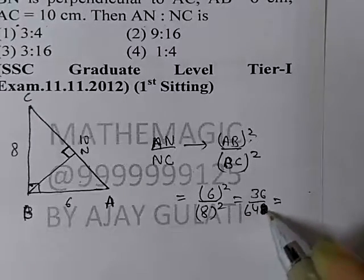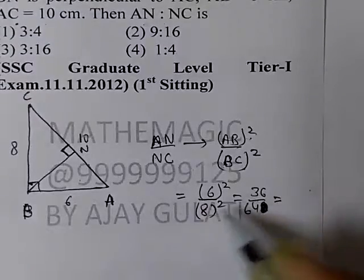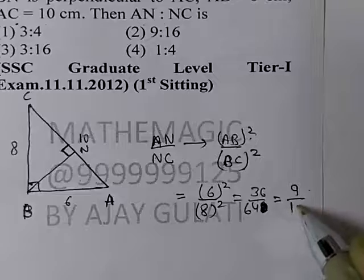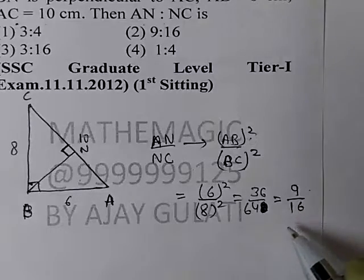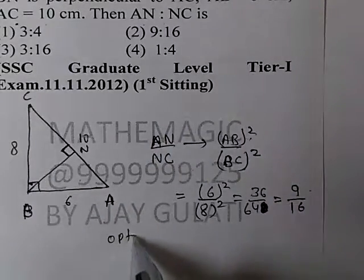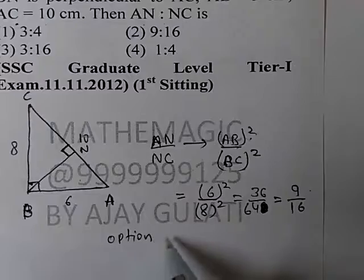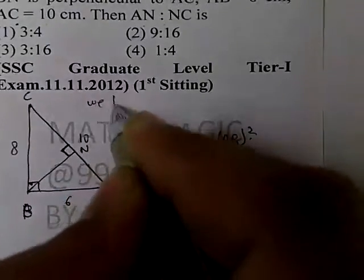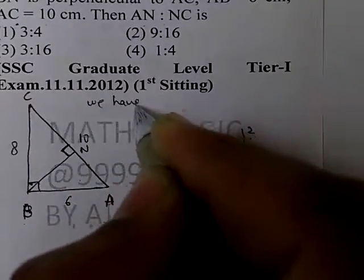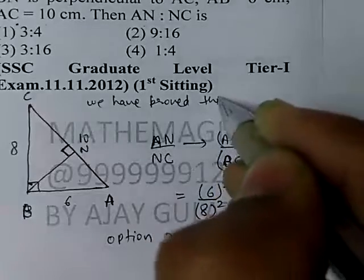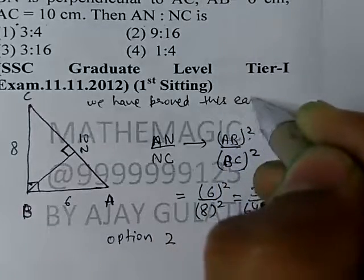Simplifying 36 over 64, you can also directly say 3 squared over 4 squared, which gives us 9 over 16. So the answer is option number 2. We have proved this earlier. Thank you.